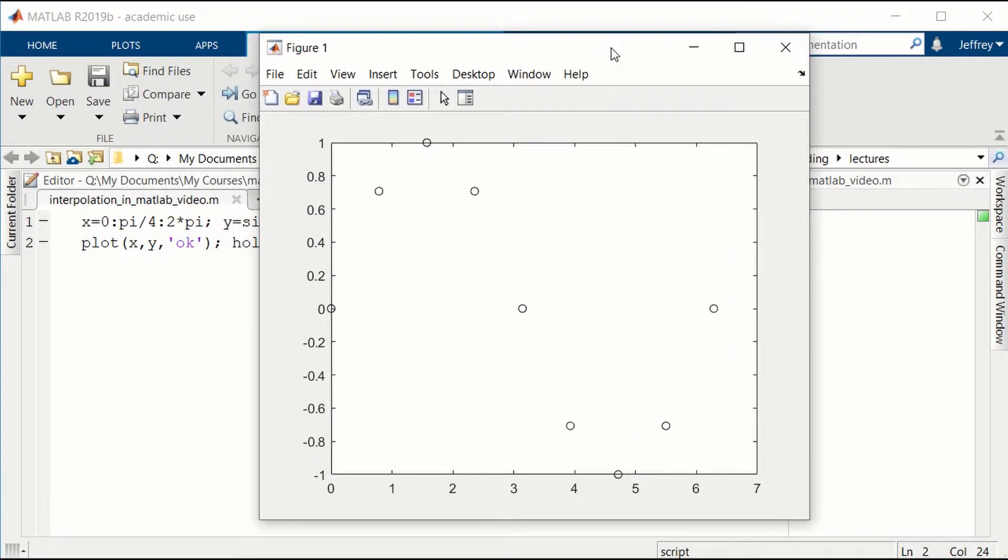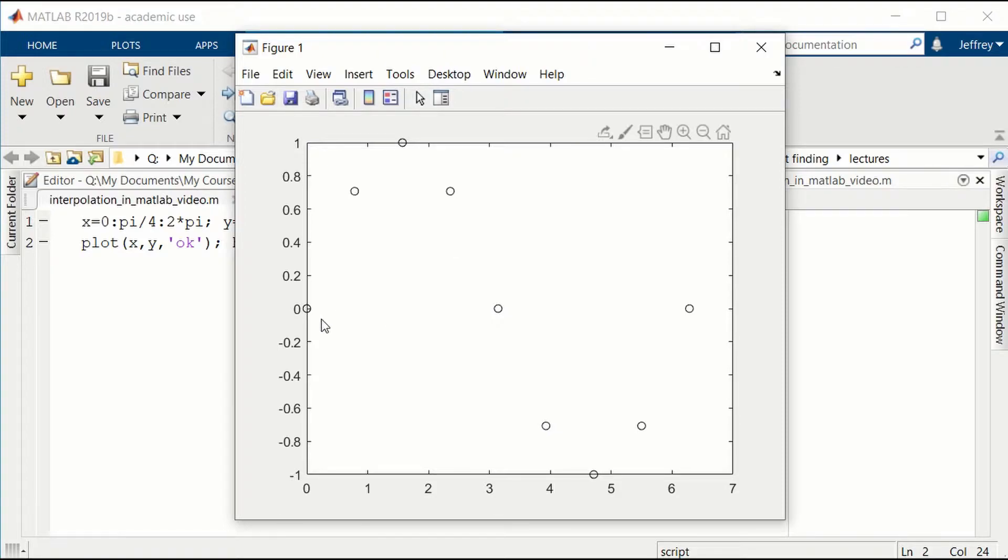Here is our plot. You see that these points are separated by pi over 4. And you can see the sine function here, but there's a lot of gap between the different points. So, I want to test this interp1 cubic spline interpolation and see how nicely it can fit these points.